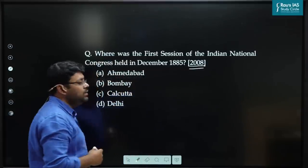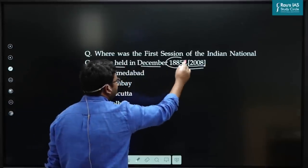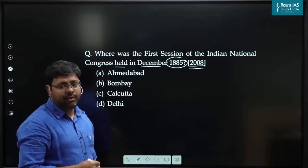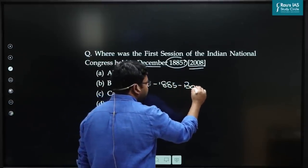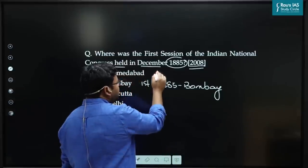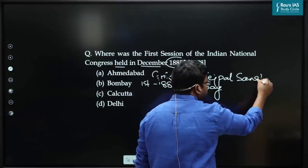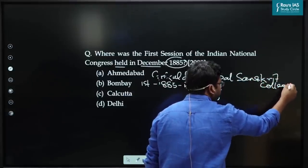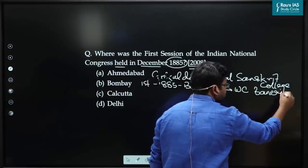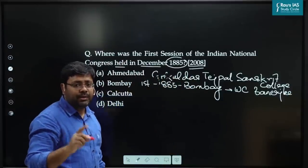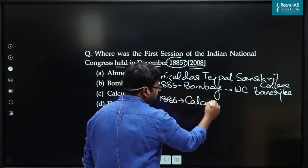The first question was asked by UPSC in 2008: where was the first session of the Indian National Congress held in December 1885? The first session of Congress was in 1885 in Bombay, at Gokuldas Tejpal Sanskrit College, and was presided by W.C. Banerjee, who was the first President of Congress. The second session was in 1886 in Calcutta.